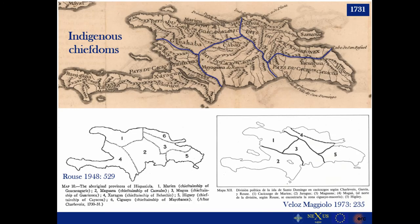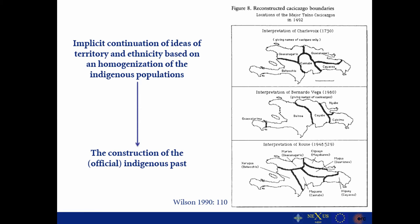He created a visual representation of the indigenous spatial organization back at the late 15th century. What he did was to pretty much put together all the information and create boundaries and political hierarchical territories, each territory connected with a cacique or chief. This map has been used by mid and late 20th century archaeologists to replicate and create interpretations about political hierarchy on the island. We think the issue here is that there was an implicit continuation of ideas of territories and ethnicity based on the homogenization of the indigenous populations, which eventually led to the contemporary construction of the official indigenous past.